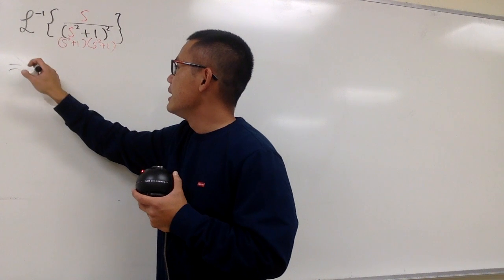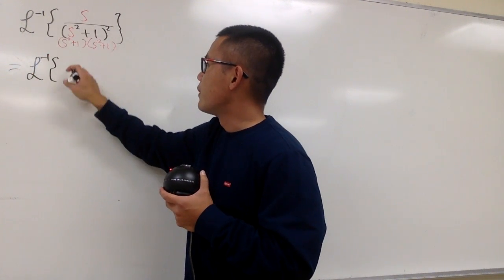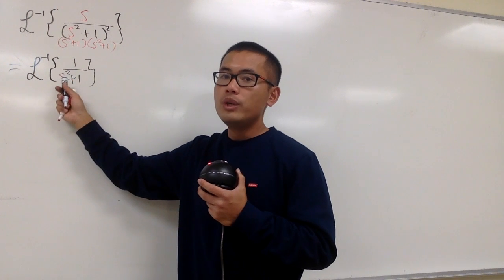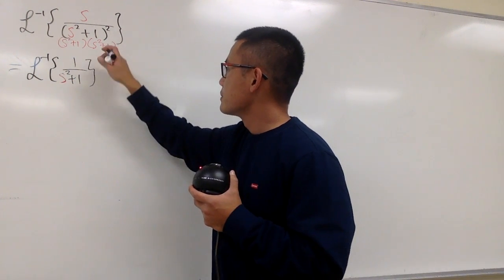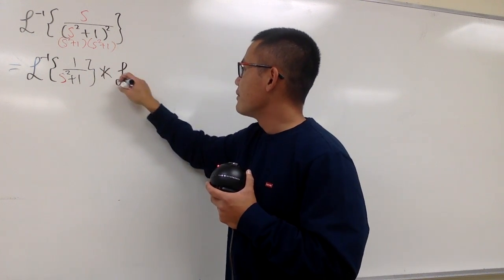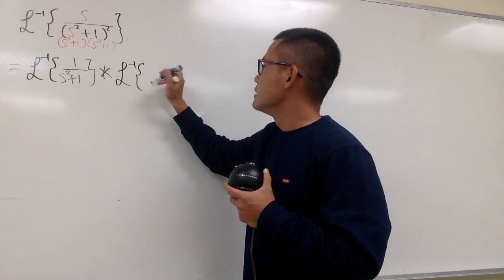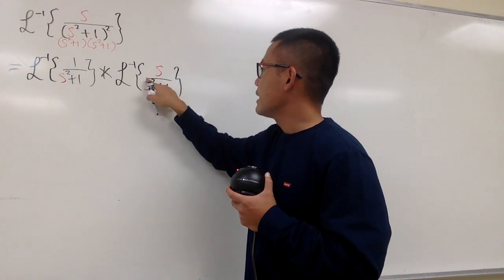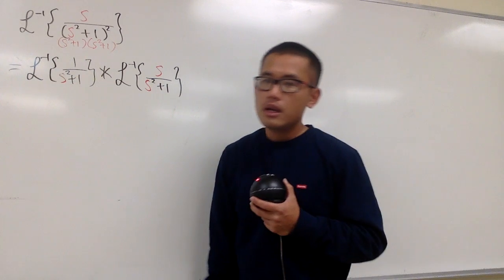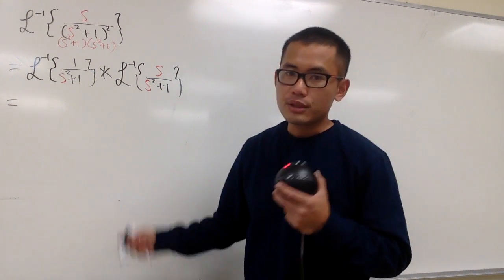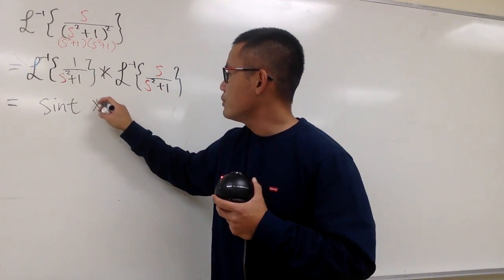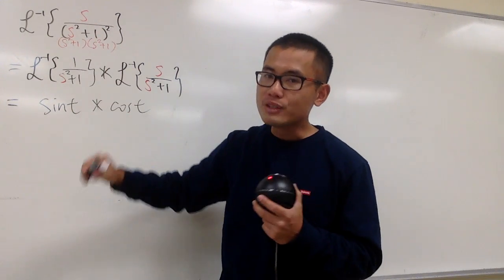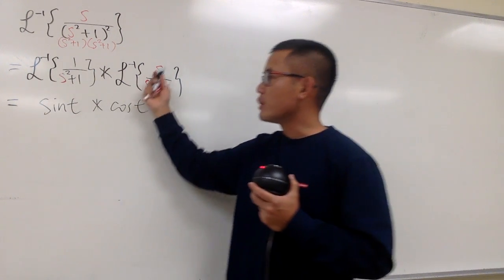This is going to be the same as the inverse Laplace — let's put down 1 over s² + 1 first. And remember, once we do the inverse Laplace of this, we are in the t world, and in the t world, when we break it apart, it will be the convolution. And we have the second inverse Laplace transform: s over s² + 1. This right here is just sine t, and this right here is cosine t.